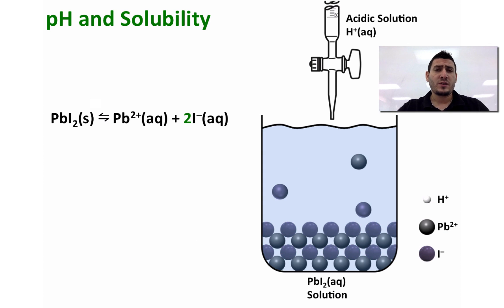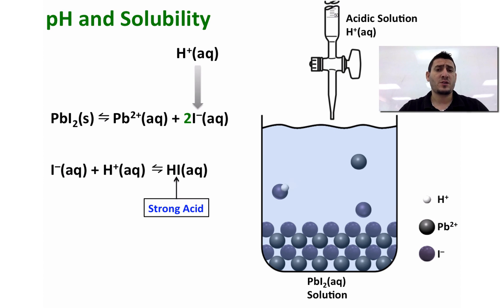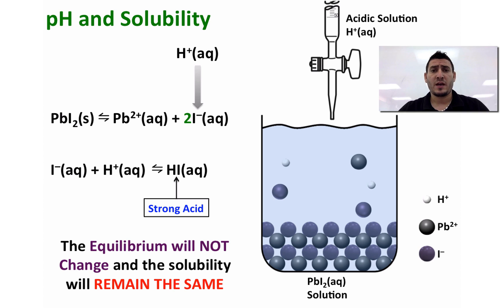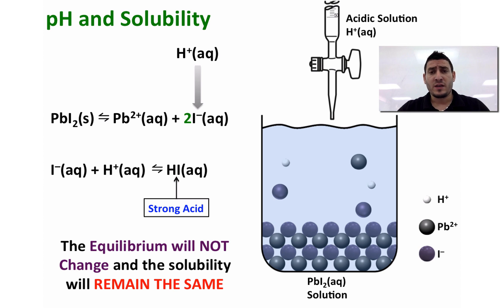However, if we consider a similar example where instead of forming a weak acid we form a strong acid, the strong acid will dissociate completely right away. In this case, the concentration of I⁻ in solution will not change, and if the concentration does not change the equilibrium will not shift — therefore the solubility of lead iodide will not be affected by pH.